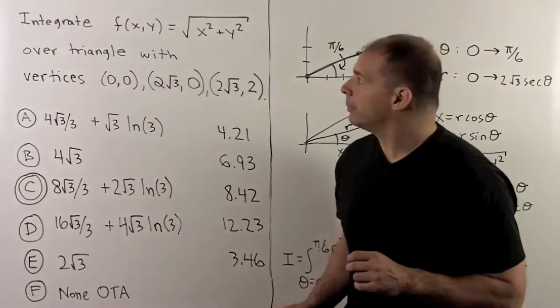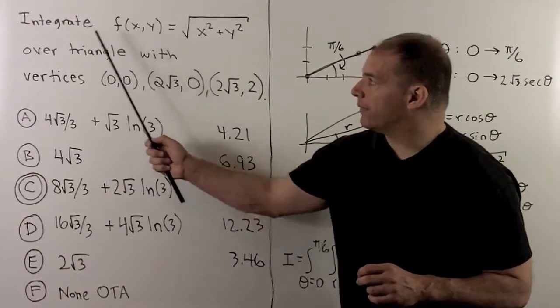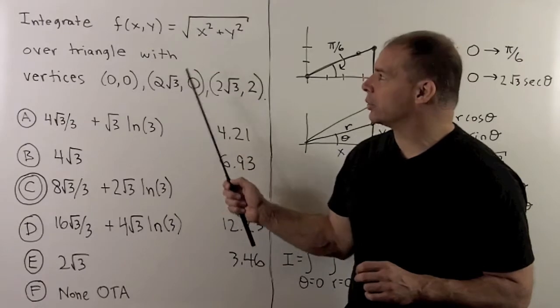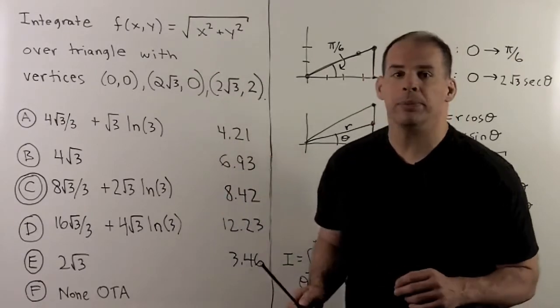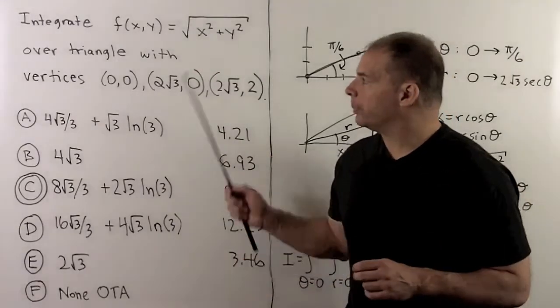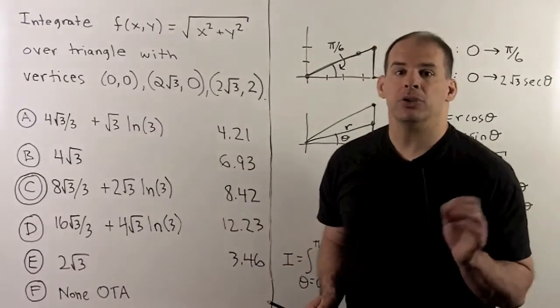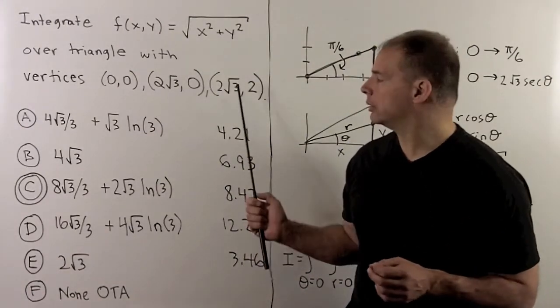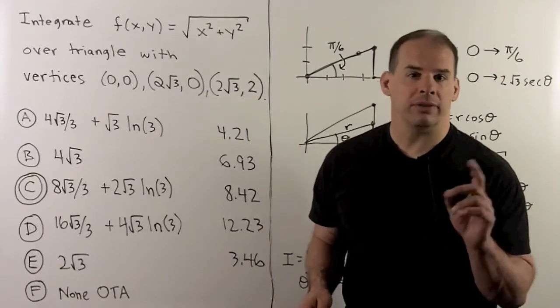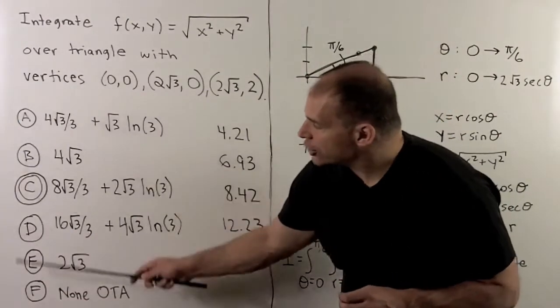Now the problem: when I integrate, we have the function on the plane f(x,y) equal to square root of x squared plus y squared, over the triangle with vertices (0,0), (2√3, 0), and (2√3, 2). We have the following range of answers.